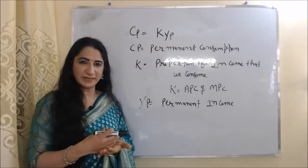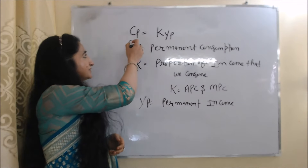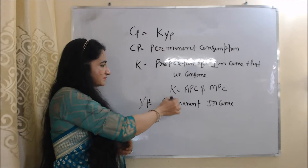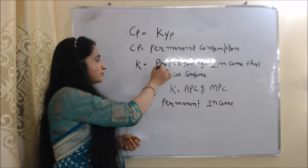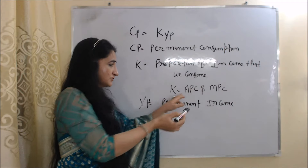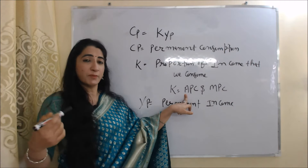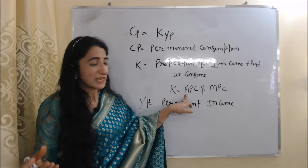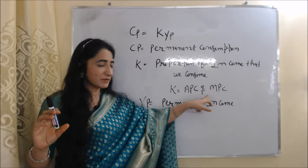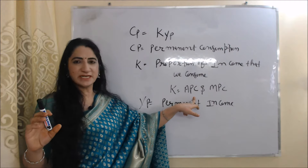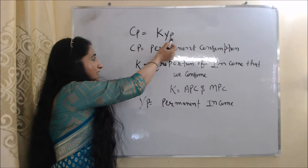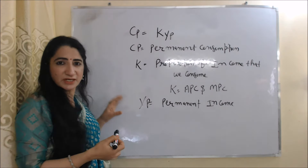Now we will look at the equation of the permanent income hypothesis: CP equals K times YP. CP is permanent consumption, YP is permanent income, and K is the proportion of income that we consume. K is equal to both APC and MPC. As we know, APC tells us the proportion of income that we consume, and during the long time period APC equals MPC. According to this equation, our permanent consumption depends on our permanent income and the proportion of income that we consume.